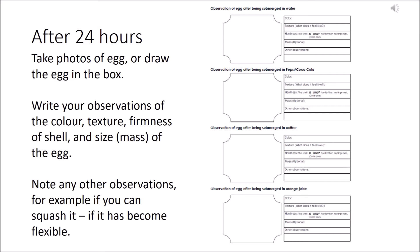For each of these boxes, I want you to write your observations of the color, texture, firmness of the shell, and the size of the egg, the height by the width, the length by the width.